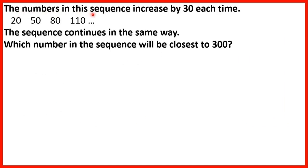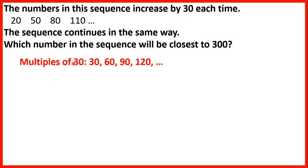The numbers in this sequence increase by 30 each time: 20, 50, 80, 110, and so on. The sequence continues in the same way. Which number in the sequence will be closest to 300? The numbers are increasing by 30, and multiples of 30 are 30, 60, 90, 120, and so on.